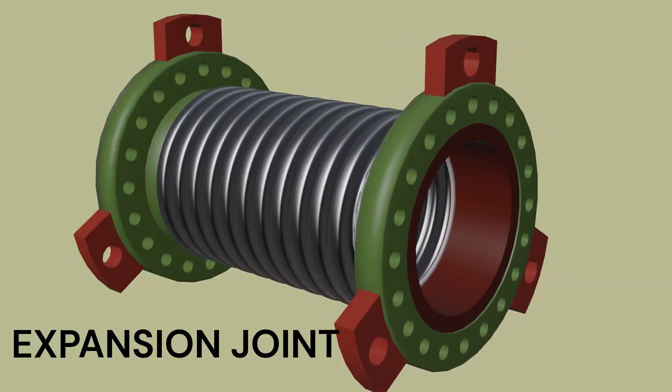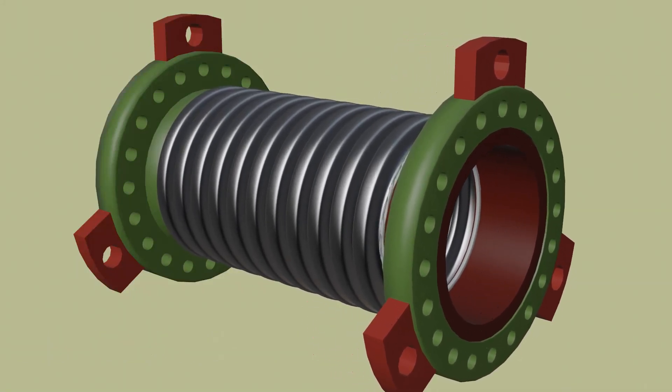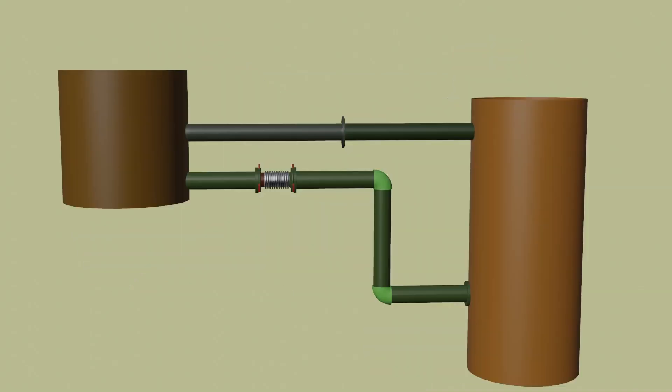Expansion joints are bellows-type devices used to absorb thermal expansion.